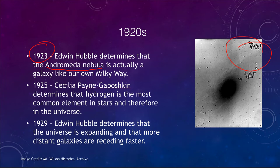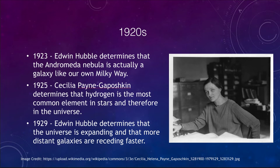In 1925, Cecilia Payne-Gaposchkin gave us the idea and showed us that hydrogen is the most common element in the universe. Hydrogen makes up 90% of the atoms in the universe, but this was not determined until her analysis of spectral lines in her thesis showed that the abundances of hydrogen were tremendous. It was very difficult to accept at the time — she even had to include a disclaimer saying it could not possibly be correct — but it turned out that it was.